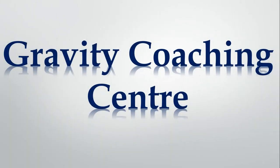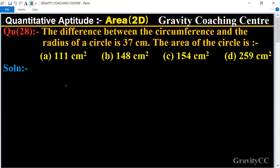Welcome to our channel Gravity Coaching Centre. Quantitative Aptitude, chapter Area, question number 28. The difference between the circumference and the radius of a circle is 37 centimeters. The area of the circle is: According to the question, the difference between the circumference and radius is given.